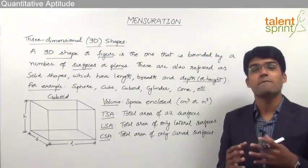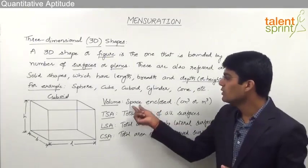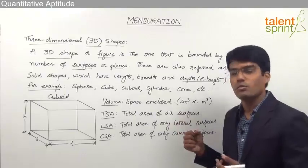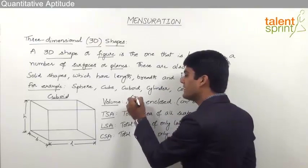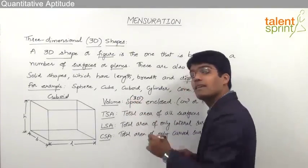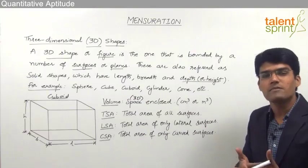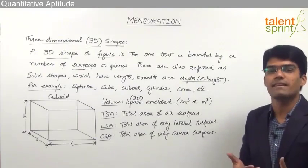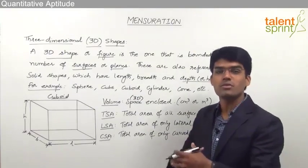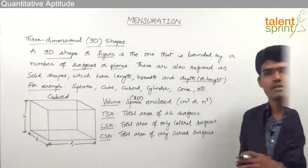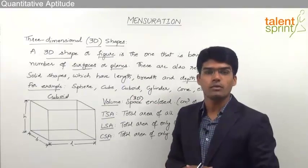As we have seen in case of area, area was surface occupied, whereas volume is space occupied. Space is 3D and surface in case of area is 2D. The 2D surface which is occupied is area; the 3D space occupied or enclosed is volume. That is the major difference between area and volume.